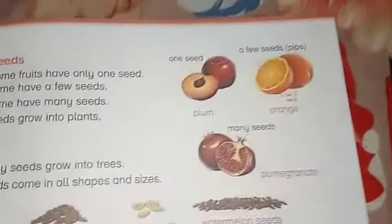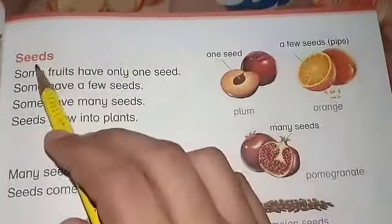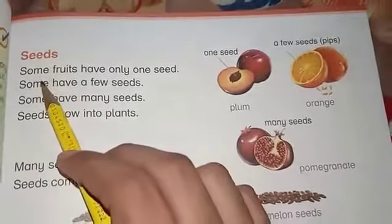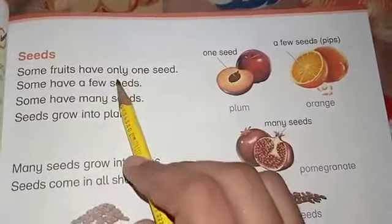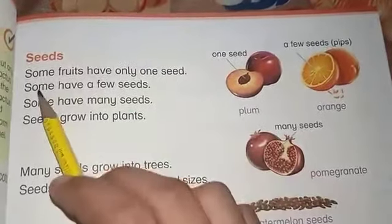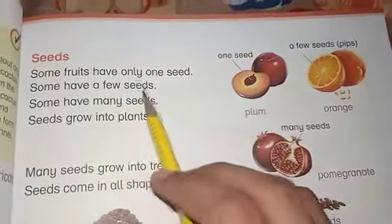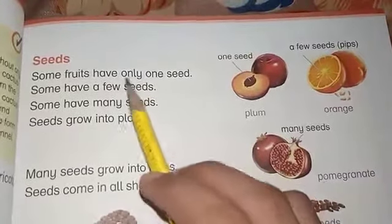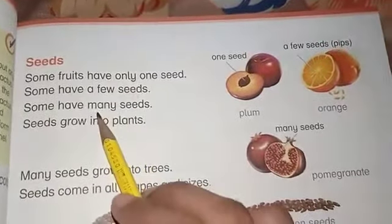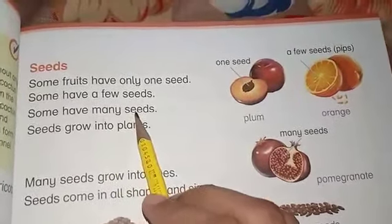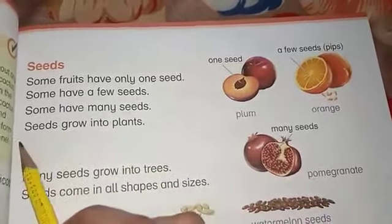Page number 21. Start reading. Today's topic is seeds. Some fruits have only one seed, some have a few seeds, and some have many seeds.